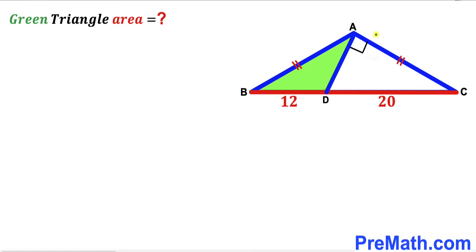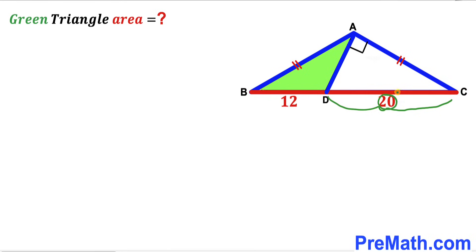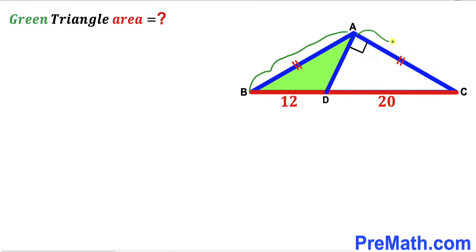Welcome to pre-math. In this video we have got this isosceles triangle ABC along with this segment AD, such that segment BD is 12 units whereas segment CD is 20 units. Moreover, this angle CAD is a 90 degree angle, and this side AB equals this side AC. Our task is to calculate the area of this green shaded triangle ABD.